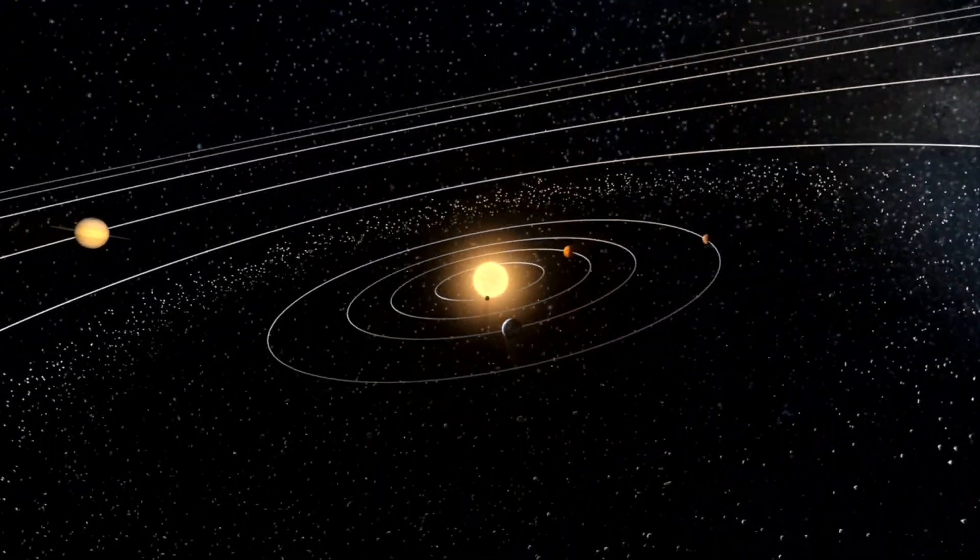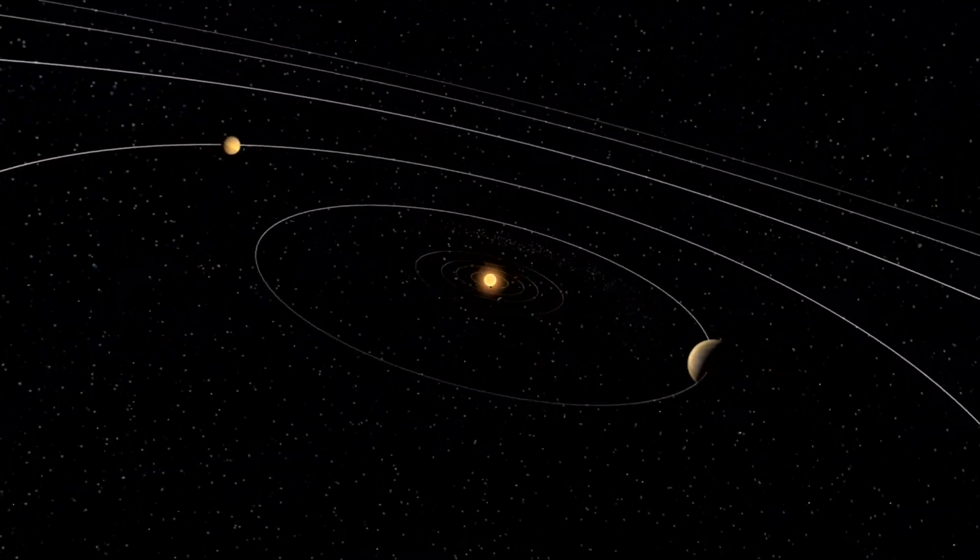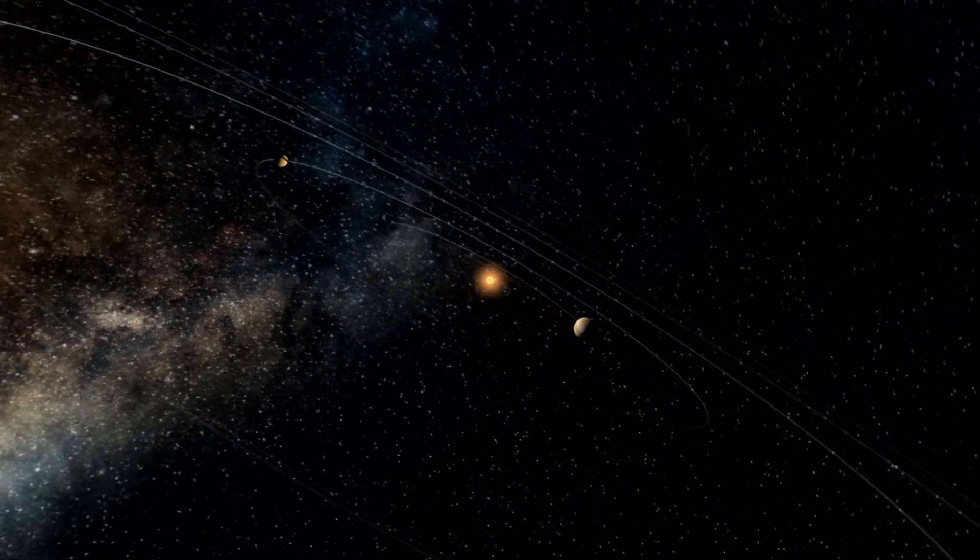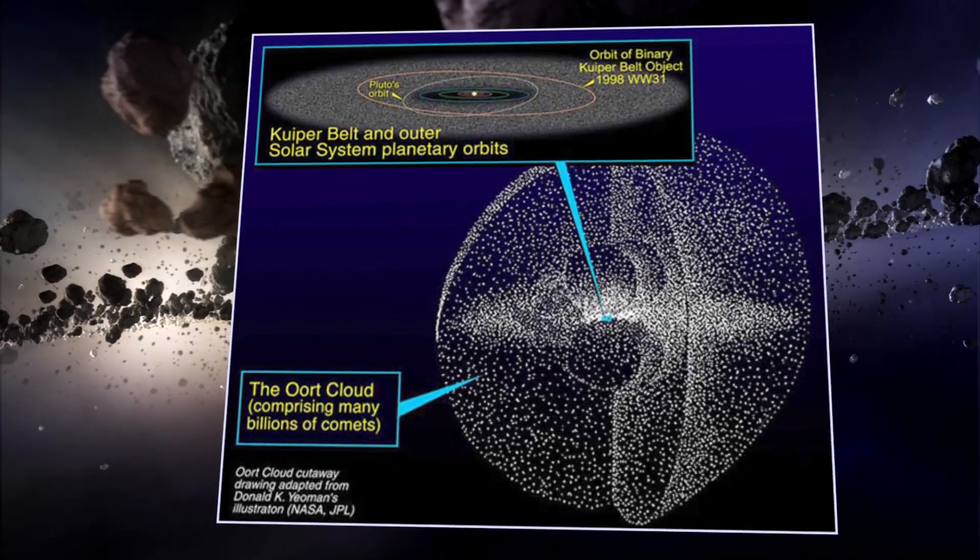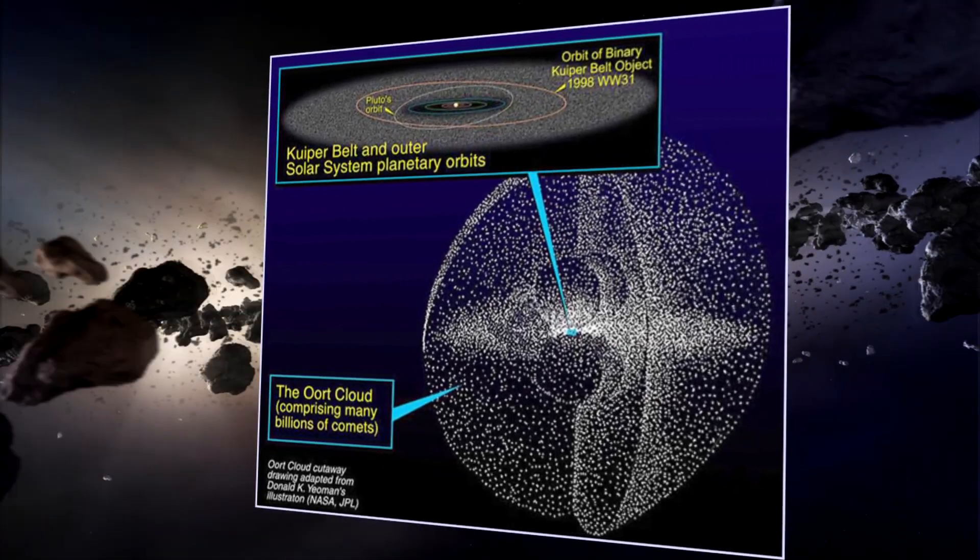Far beyond the orbit of Neptune, at the gravitational fringes of our solar system, sits a vast field of icy debris known as the Oort Cloud. Extending nearly one light year from the sun, the Oort Cloud is thought to be the reservoir of comets.